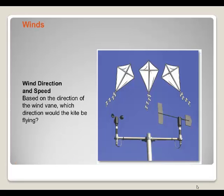The picture here shows an anemometer. Based on the direction of this anemometer, which direction would the kite be flying? If the wind vane is pointing to the right, that means the wind is coming from the right. So the kite would be flying to the left, because the wind would be blowing from the right to the left.